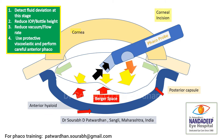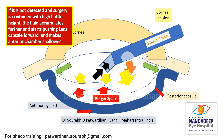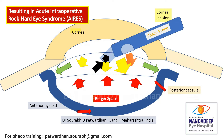At this point the IOP is still normal, but if it goes undetected and surgery is continued with high bottle height for a longer time, the fluid will accumulate further and push the posterior capsule further forward. It will push the iris forward and result in acute intraoperative rock hard eye syndrome because of raised intraocular pressure. The anterior chamber becomes really very shallow and there is imminent danger of posterior capsular rupture. Doing any maneuvers in the anterior chamber at this point becomes very tough — even trying to implant the IOL may push against the posterior capsule and lead to posterior capsule rupture.